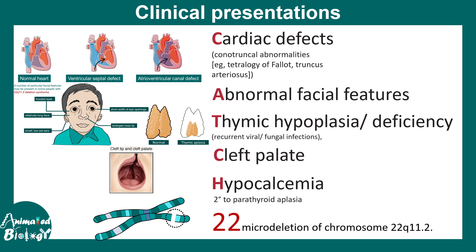A stands for abnormal facial features associated with DiGeorge syndrome. T stands for thymic hypoplasia — underdevelopment of the thymus. C stands for cleft palate, where the upper part of the palate is not joined properly. H stands for hypocalcemia, which results from parathyroid hormone imbalance. And 22 stands for the 22q11.2 deletion.